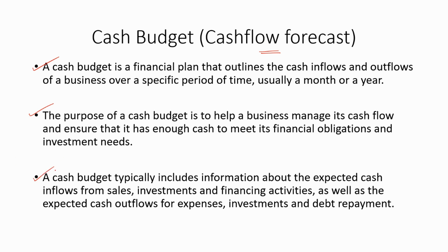A cash budget typically includes information about the expected cash inflows from sales, investments and financing activities, as well as the expected cash outflows for expenses, investments and debt repayment. Simply, under cash budget, management accountants have to consider the cash inflows and cash outflows for a specific period of time.